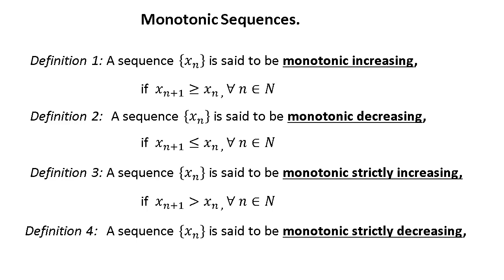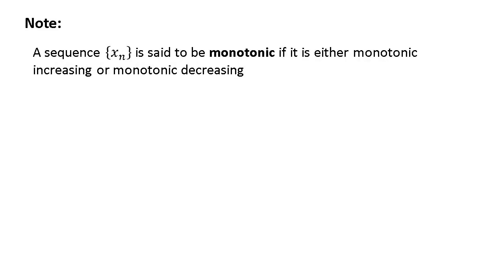Similarly, a sequence is said to be monotonic strictly decreasing if xn+1 < xn for any n — any term is strictly less than its preceding term. These are the four important definitions. A sequence xn is said to be simply monotonic if it is any of the above four types: either monotonic increasing, strictly increasing, monotonic decreasing, or strictly decreasing.